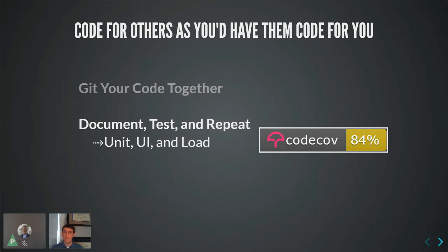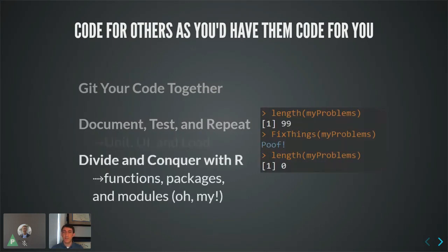Tests are also your documentation and are great for making sure your code works as you make changes. There's unit testing such as testthat and tinytest, but also UI testing with shinytest, load testing with shinyloadtest, and user acceptance testing. This has been essential for making updates and improvements to the application. Because R is a functional programming language, it lends itself well to division of labor — you create packages and modules rather than one monolithic 60,000-line script.